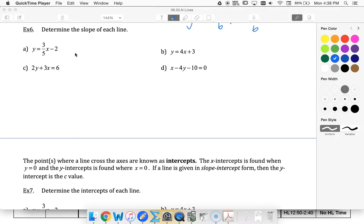All right, determine the slope of each line. Well, this is in slope intercept form, so I can say straight away that the slope must be 3 fifths, rise 3, run 5.